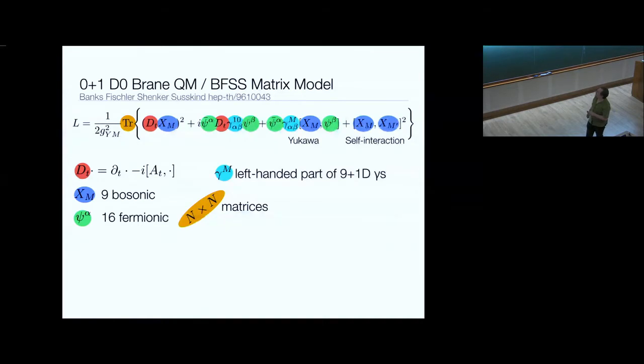It's a gauge theory with gauge derivatives. We've got the left-handed parts of the 9+1 dimensional gamma matrices making these guys 16 Majorana fermions, and then there are these nine bosonic N by N matrices from compactifying or dimensionally reducing some higher dimensional theory to this 0+1 space. There are self-interaction terms, Yukawa terms, and it has an obvious non-perturbative definition as discretized quantum mechanics, manifestly unitary.